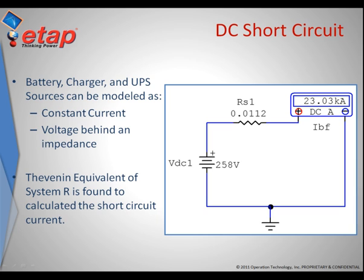First, let's start by talking about DC short circuit. Before we can perform any DC arc flash analysis, we must first describe the impedance and the voltage or current source in our system. In this case, we are referring to battery banks, chargers, UPS, and rectifier sources.